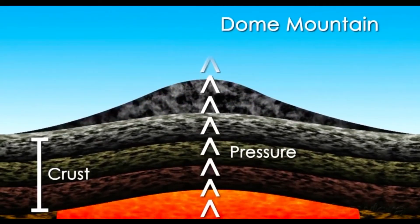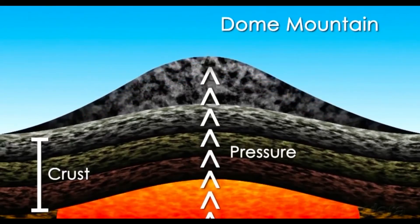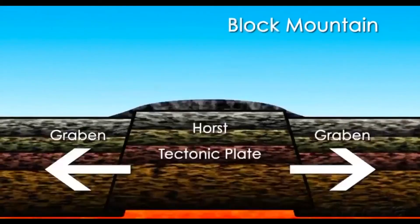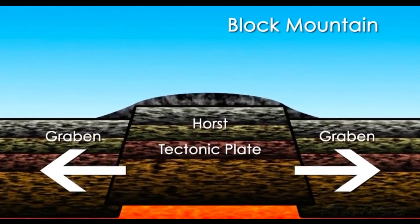We also have what we call a dome kind of mountain. This is formed where pressure exerted onto the earth's crust due to the magma beneath forces the layers on the earth's crust to raise up, forming a dome, which later forms what we call a dome kind of mountain.